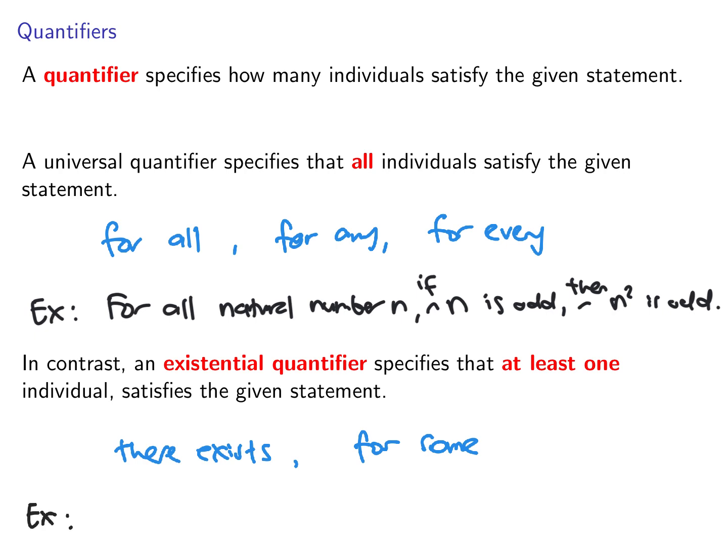Example of an existential statement: There exists a real number that is not rational. This is a true statement. Square root of 2 is an example.